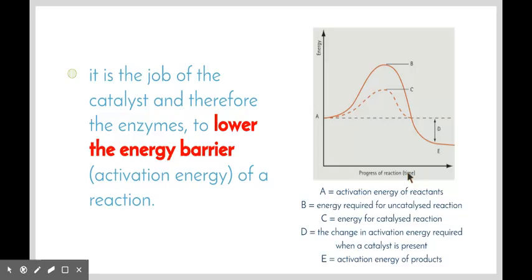It is the job of the catalyst, and therefore the enzymes, to lower the activation energy or the energy barrier of a chemical reaction. As we can see here in this graph, we have two lines. B shows us the amount of energy required for an uncatalyzed reaction to take place, whereas the dotted line C shows us how much energy is required for a catalyzed reaction to take place. Take note, we start with the same amount of reactants and we finish with the same amount of product. We just reduce the amount of energy needed to get to the same point.